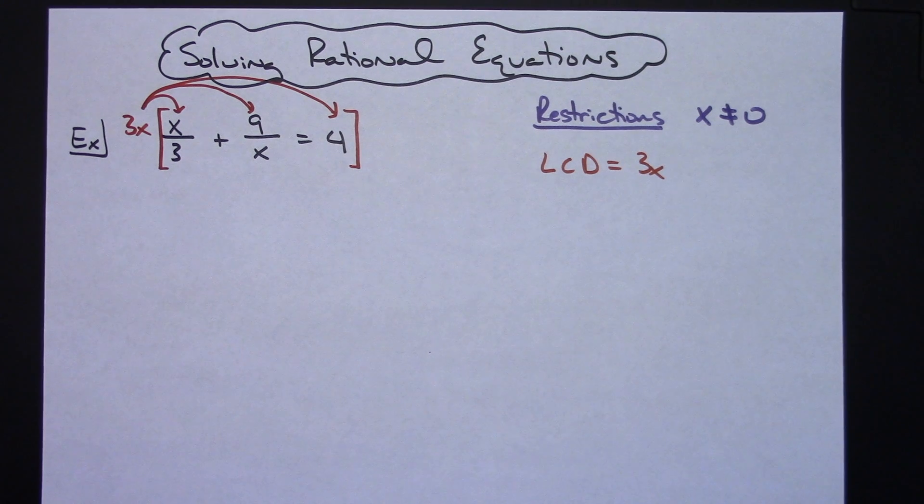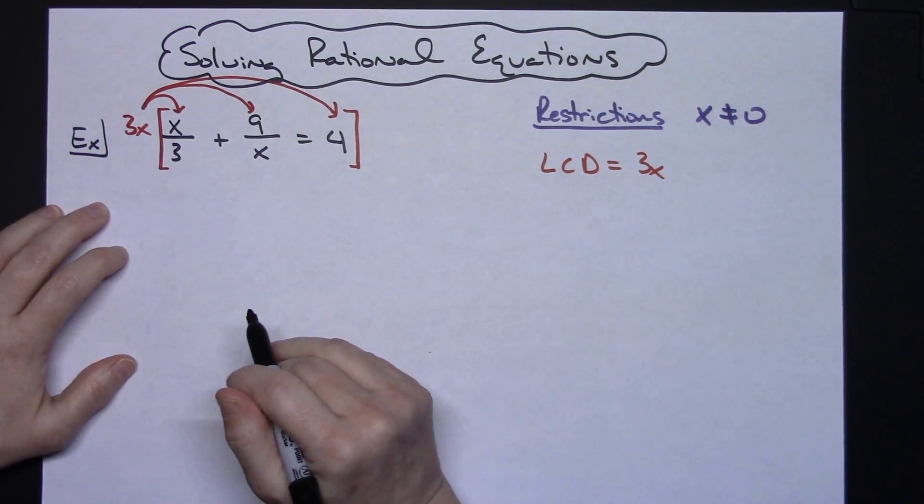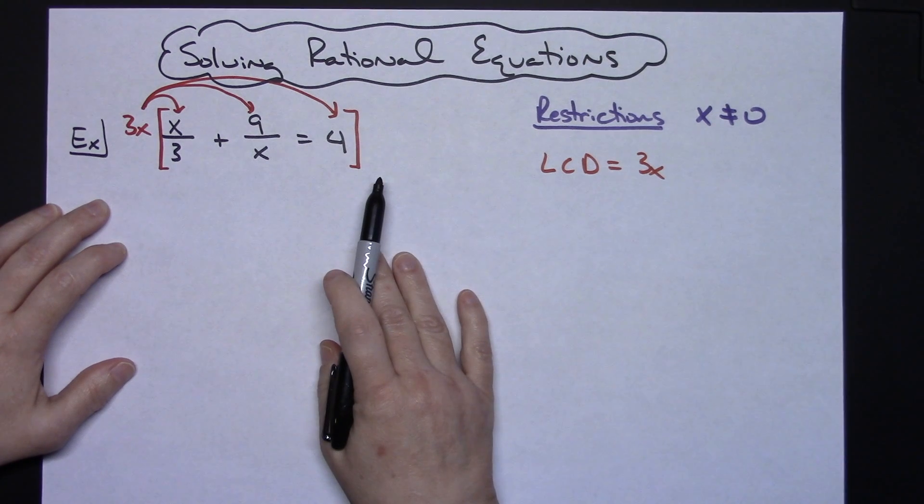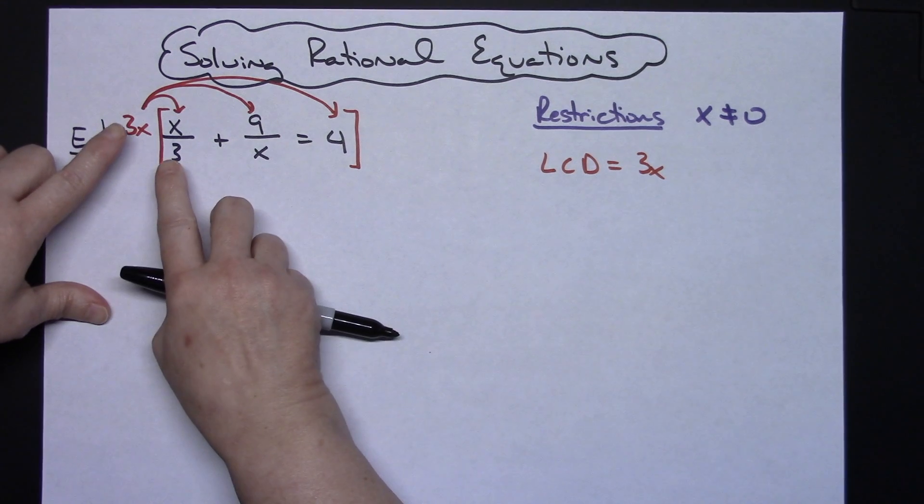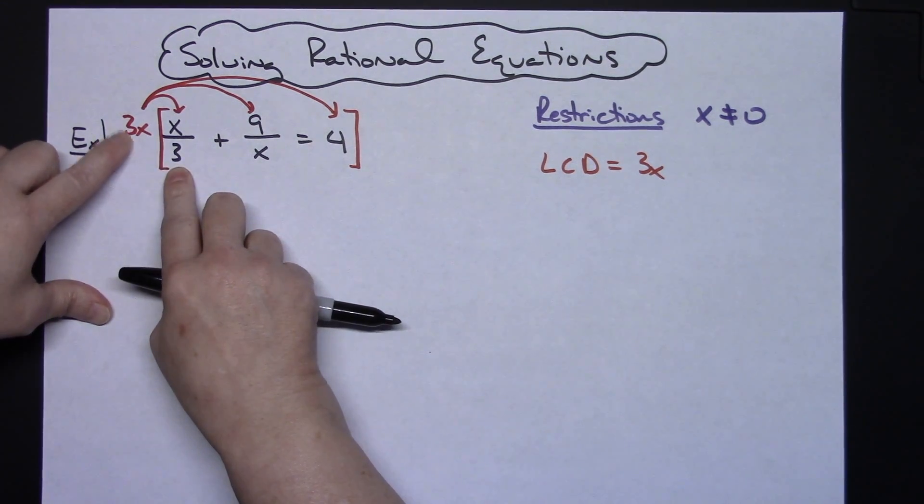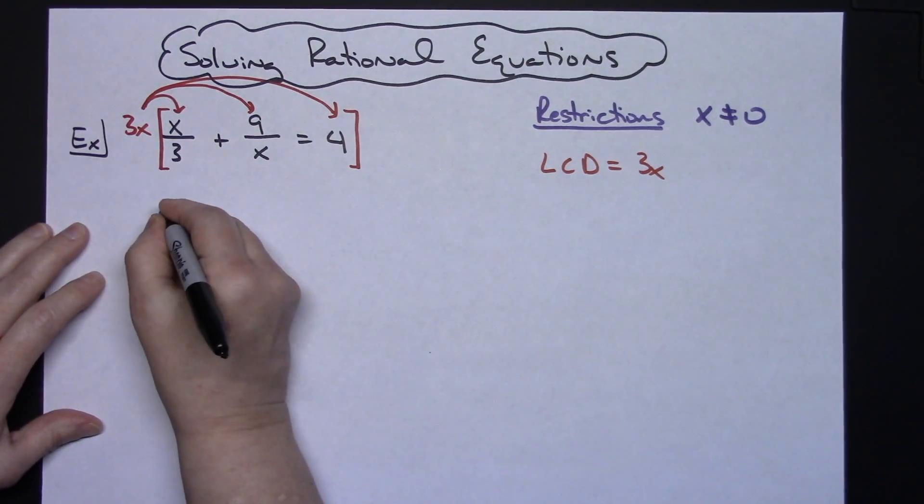This cleans it up and keeps it a little bit nicer that way. Now if I have chosen the correct least common denominator and do this next step right, I should eliminate all of my fractions. So 3x times x over 3. Well these two 3's are going to cross out. So they're going to be gone and I'm going to be left with x times x which is x squared.